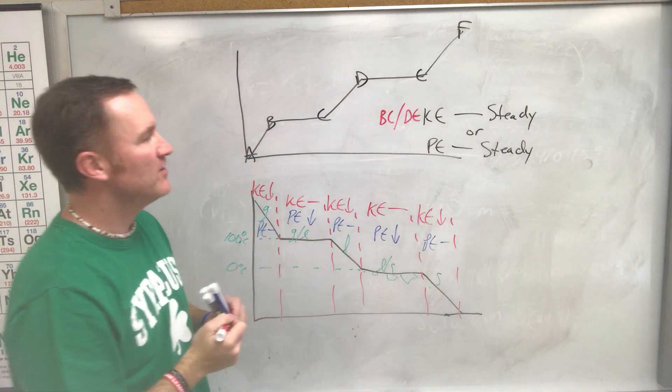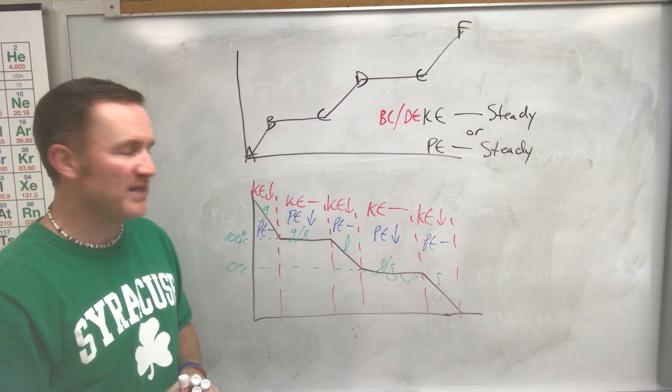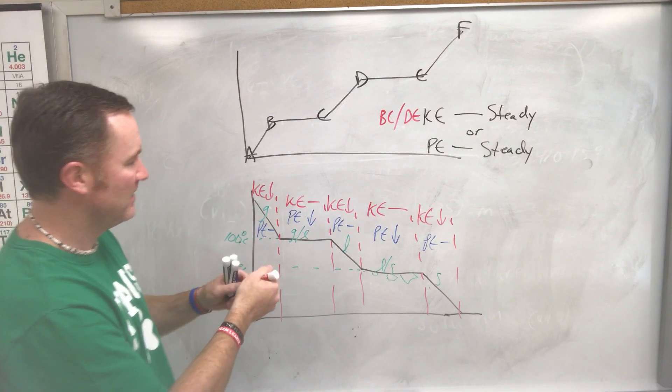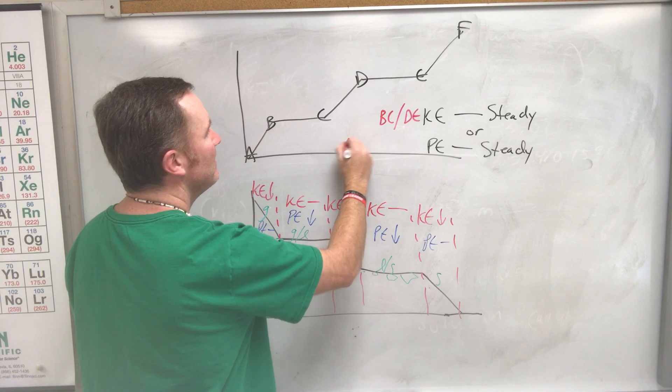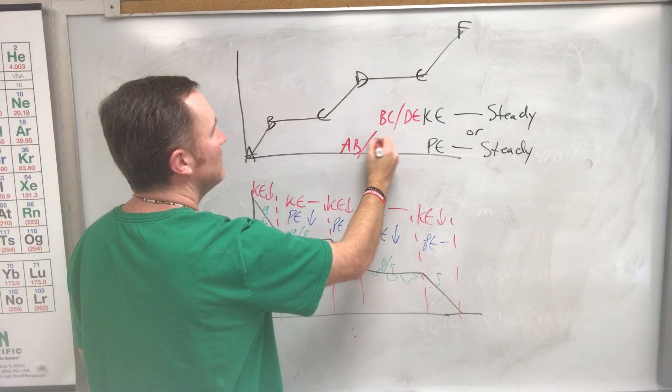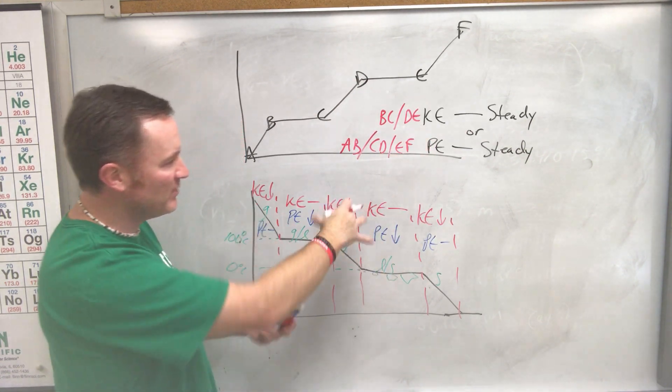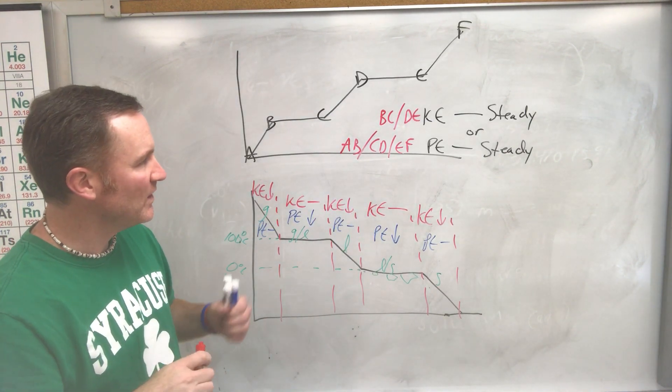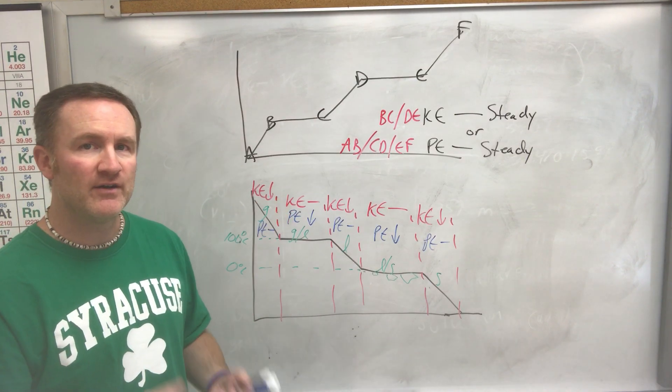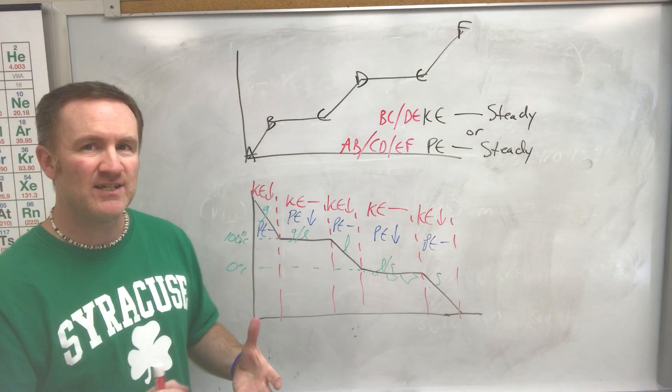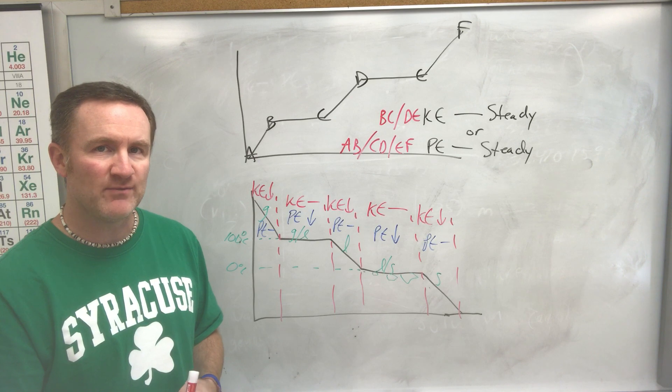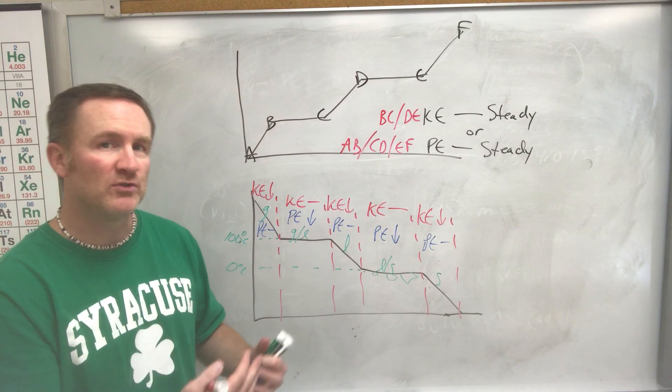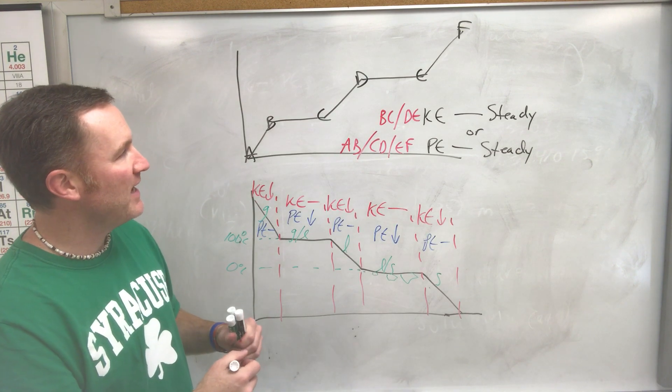There's no change in temperature, that would be the flat sections. So for the KE to be steady, it could be B-C or D-E. For the PE or the potential energy to be steady, that was these other sections here where kinetic is changing, potential isn't, so that could be either A-B, C-D, or E-F. And the same would be true down here. There's many different ways that they could phrase those questions, and again those are something you want to be very wary of. It's pretty consistent and almost every year you see something very similar to that on the Regents exam.